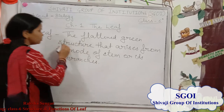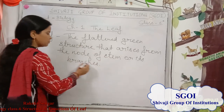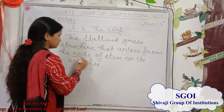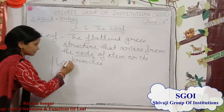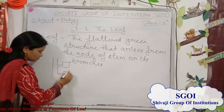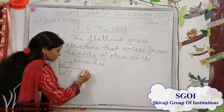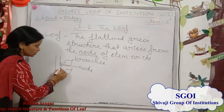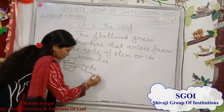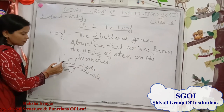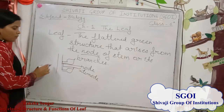A leaf is the flattened green structure that arises from the node of stem or branches. What is a node? A node is the place on the stem where the leaf arises. This place is called a node. And the place between two nodes is called an internode.